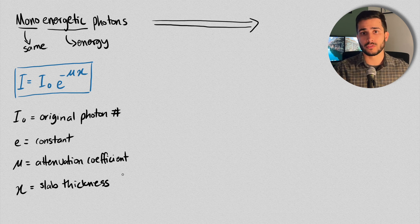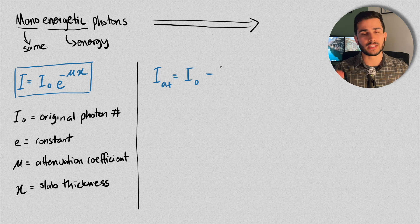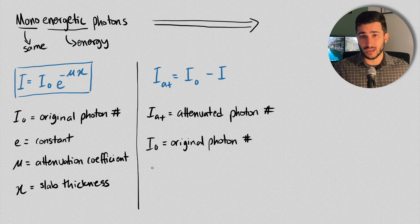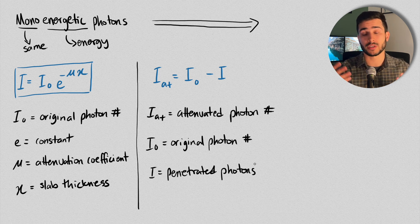Where I₀ is the number of photons in the beam before the interaction, before the thin slab has been placed into position, e is just a constant, and μ is the attenuation coefficient of that medium, and X is just the thickness of that slab. And the number of photons ultimately attenuated would be given by this formula. Where I_AT is the number of photons attenuated, I₀ is the number of photons you initially started with, and I itself is the number of photons that went through, the ones that penetrated the material.